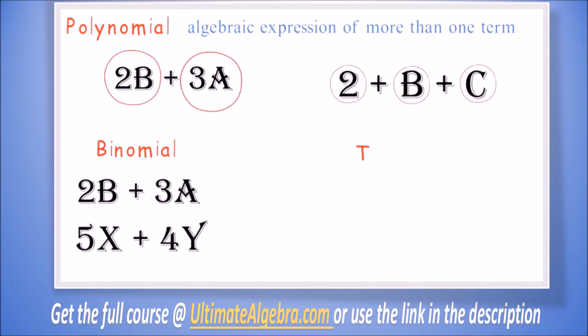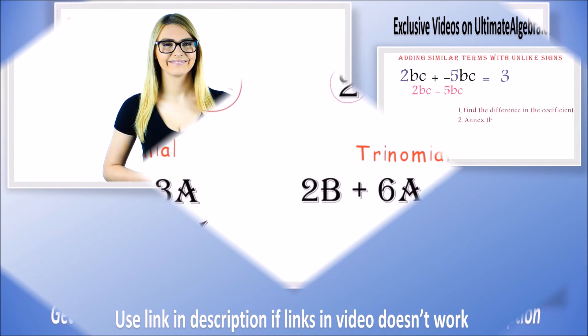Finally, let's look at trinomials. A polynomial of three terms is a trinomial. Example: 2b plus 6a minus 3a. Here we have three terms, and therefore it is a trinomial.